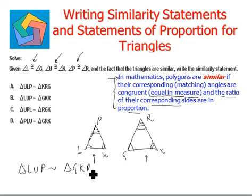Here we see that L corresponds to G, that is given. U corresponds to K, again that is given. And P corresponds to R. Any other combination would prove our answer to be wrong. This is the correct similarity statement and can be seen in option B.